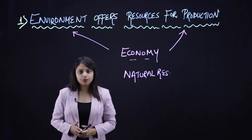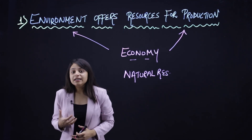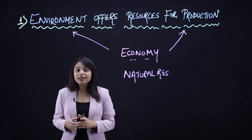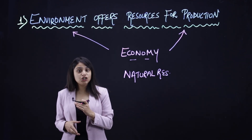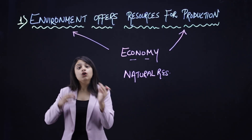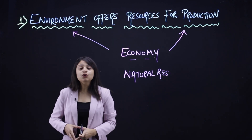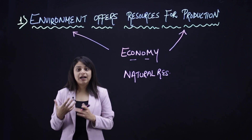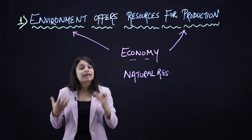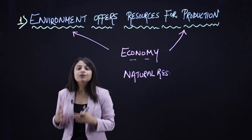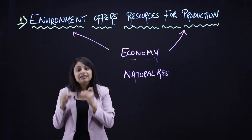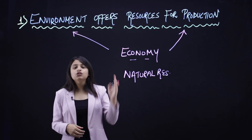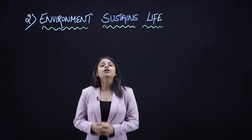All raw materials come from the environment. That is why India was made an exporter of raw materials by the British — because India was rich in natural resources, meaning the environment provided us all these things in abundance. So that is the main significance: environment offers resources for production.